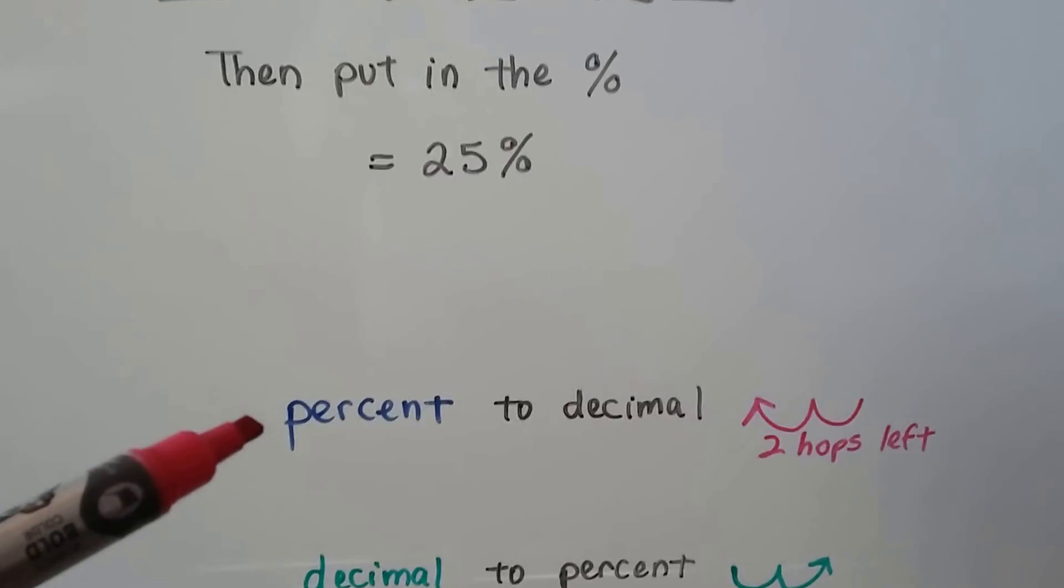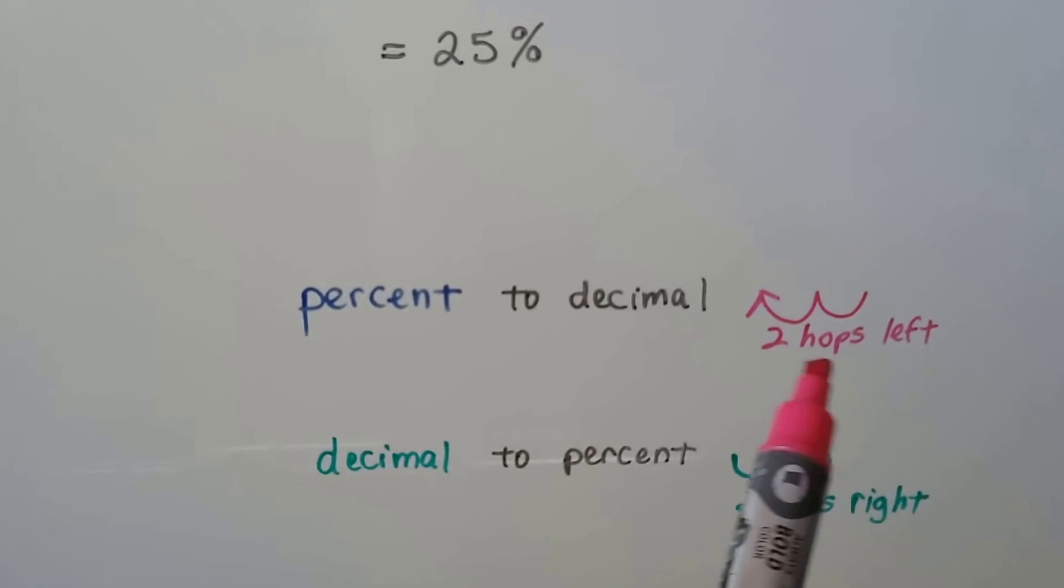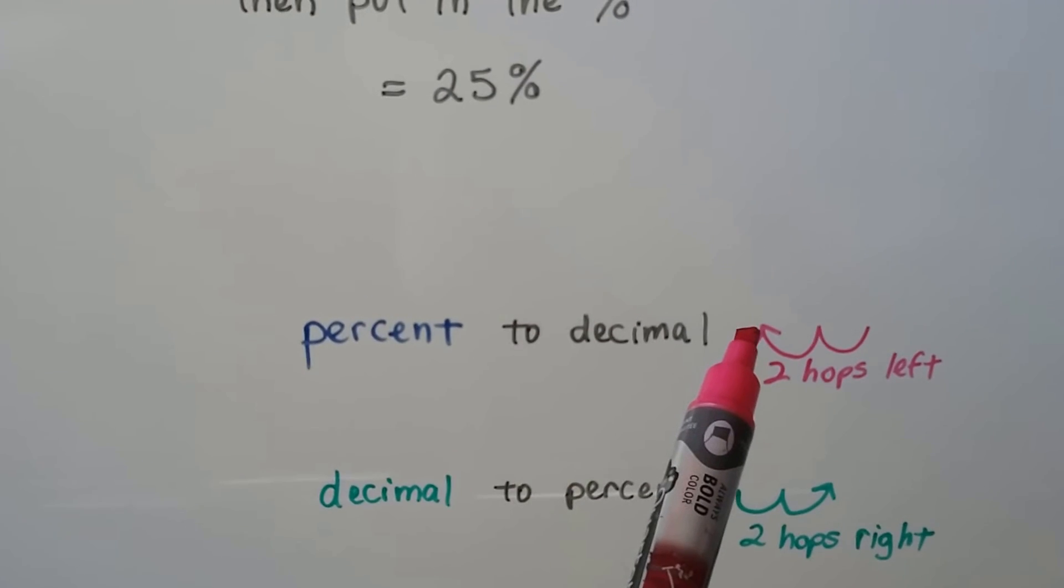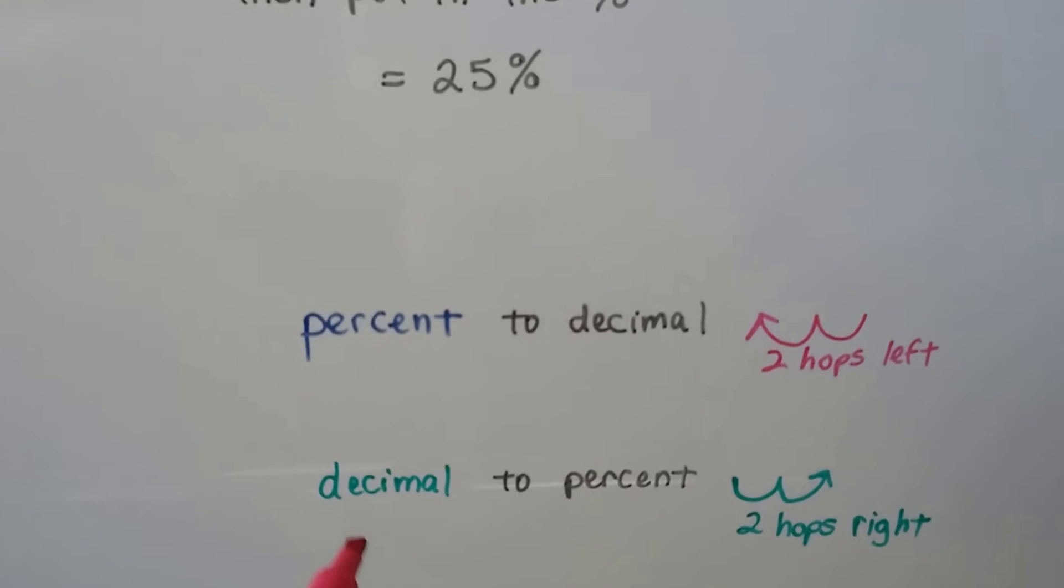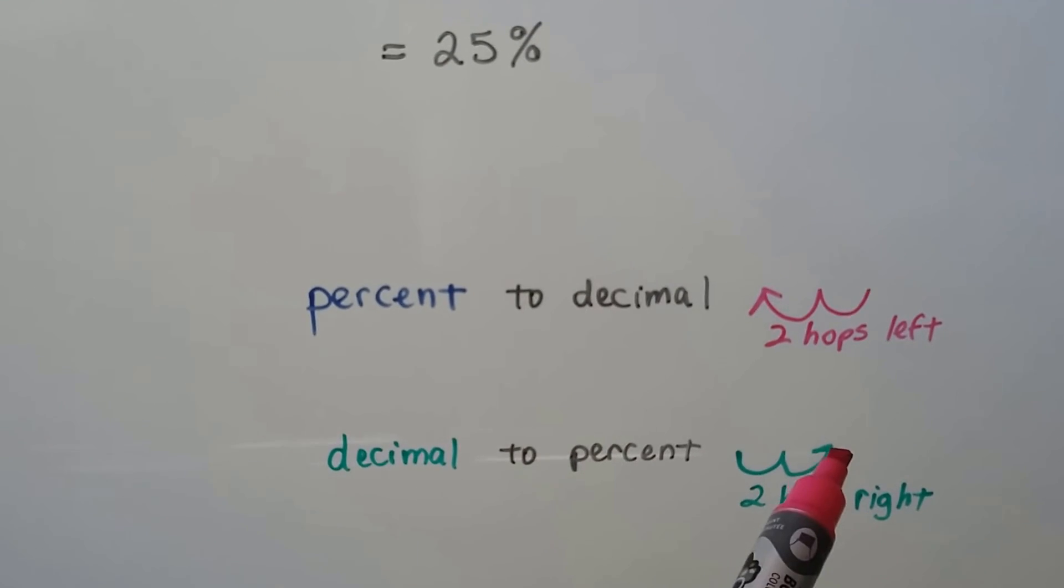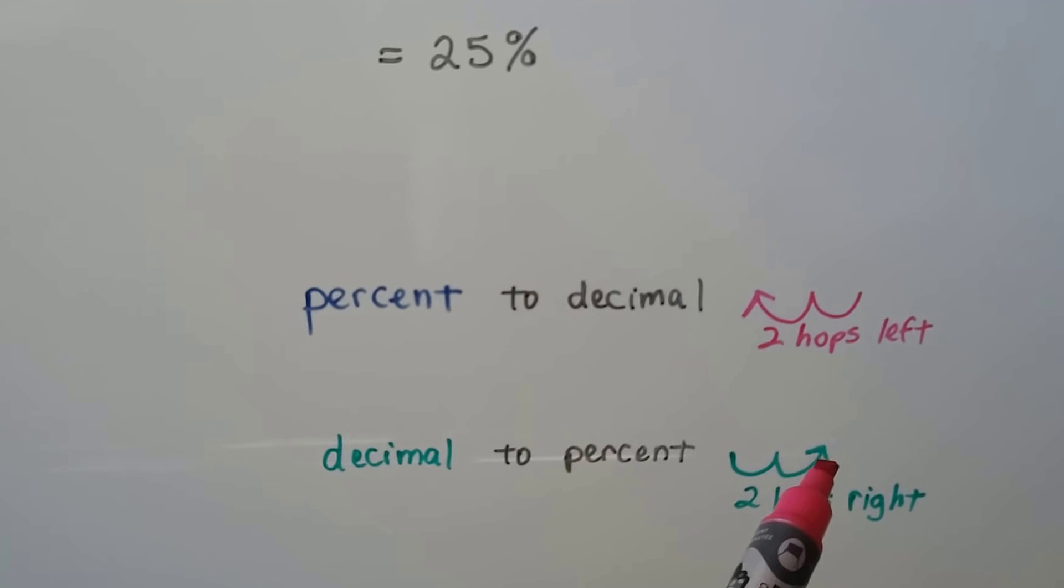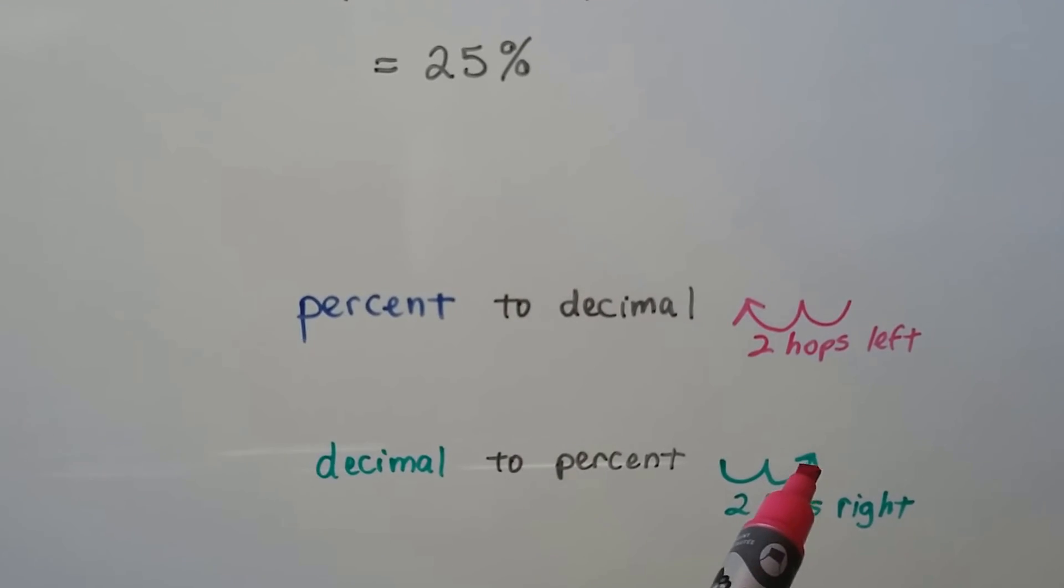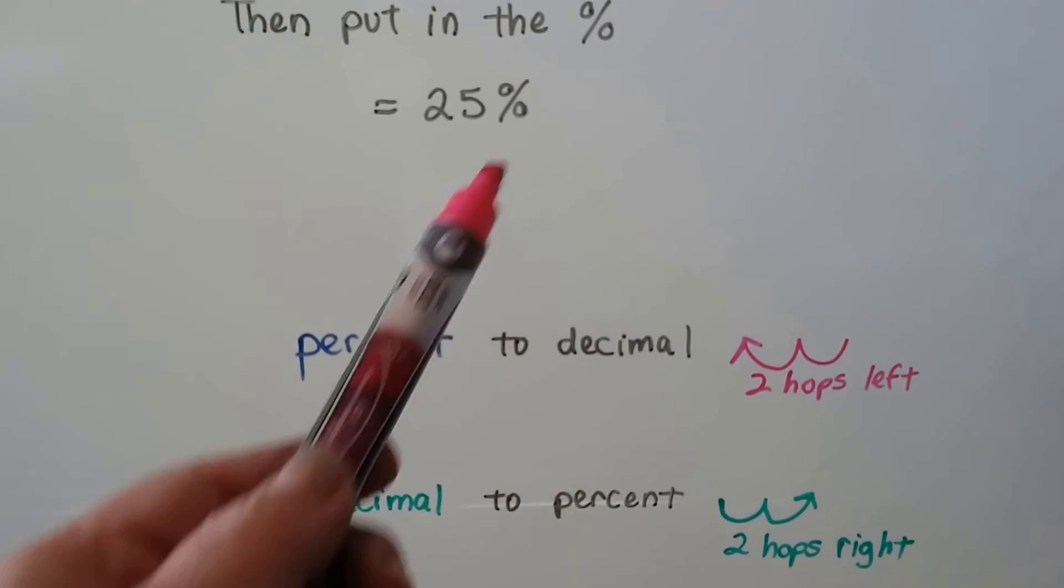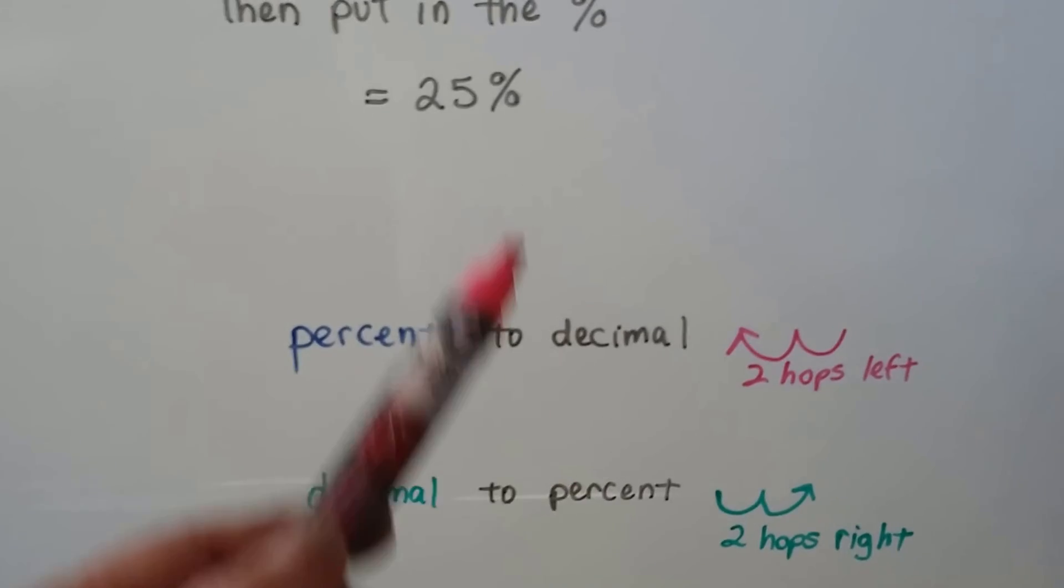So in the last video, we did percent to decimal. We moved the decimal place two hops to the left and then got rid of the percentage sign. To go from a decimal to a percent, we're going to go the opposite way and go two hops to the right, and we may or may not have to write that decimal point, and we add the percentage sign.